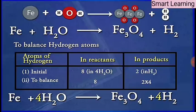Therefore, the equation would now become: Fe + 4H2O → Fe3O4 + 4H2.